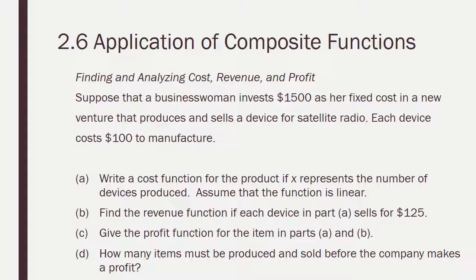Let's try an application problem. It says, suppose that a businesswoman invests $1,500 as her fixed cost in a new venture that produces and sells a device for satellite radio. Each device costs $100 to manufacture. We're going to write a cost function for the product if x represents the number of devices produced, and we're going to assume that it's linear. We're then going to find the revenue function if each device in Part A sells for $125. We're then going to give the profit function. Remember, profit is revenue minus cost. And then Part D, how many items must be produced and sold before the company makes a profit? Give yourself a challenge. See if you can do this. Pause the recording. Resume the recording to check your answer.